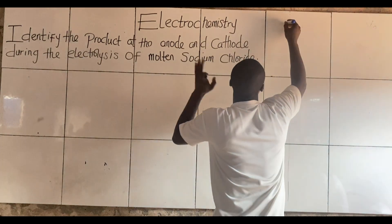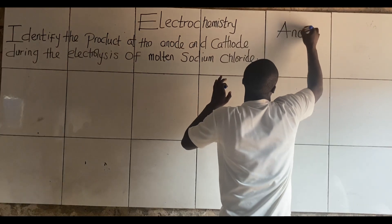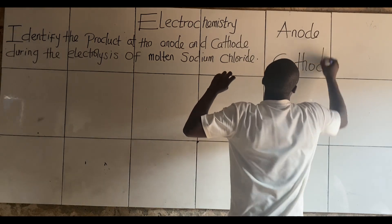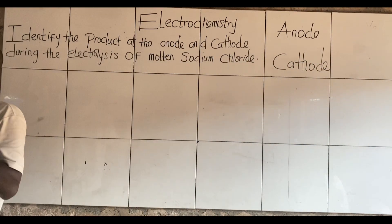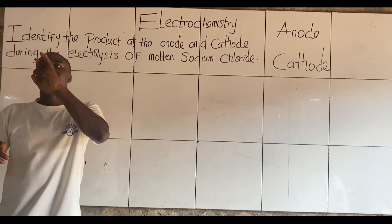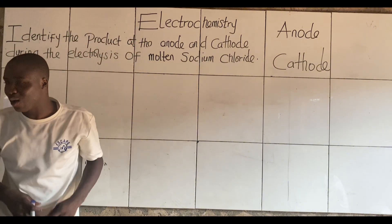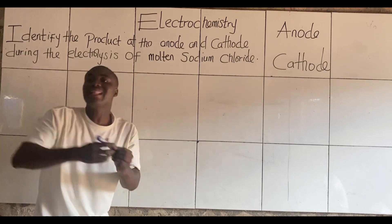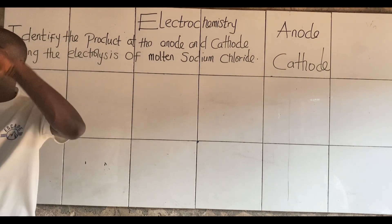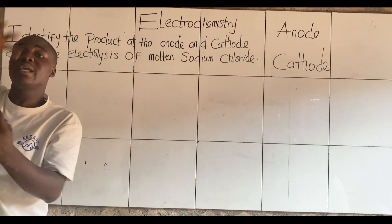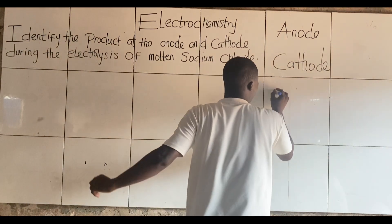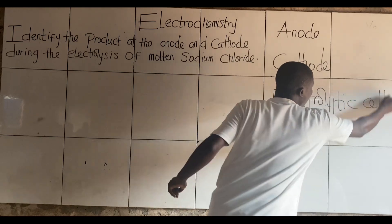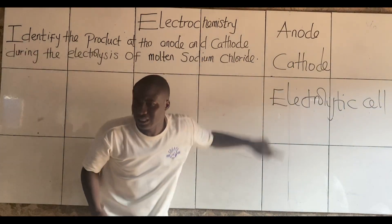Let's walk towards the electrodes. The electrodes can be either anode or cathode. I also told you guys that electrolysis, which we are discussing right now, occurs in a special vessel which I drew for you guys in the first class. It occurs in a special vessel called the electrolytic cell.